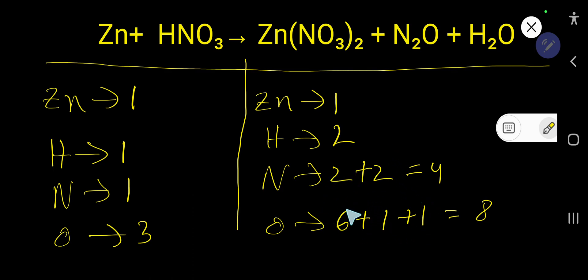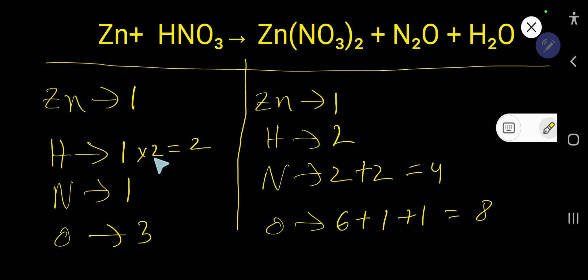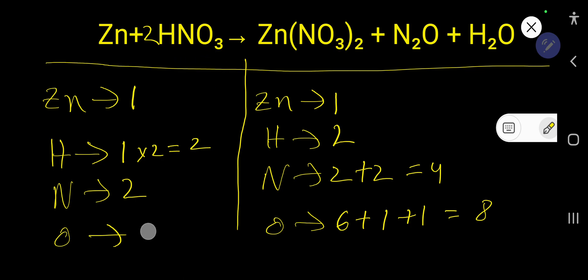We will balance atoms present in the fewest compounds first, and balance nitrogen and oxygen last. Here hydrogen is 2 on the left and 1 on the right. To balance hydrogen, I can multiply here by 2, that gives me 2. The rule is that if you multiply by something, that something must come before the atom. This hydrogen has come from HNO₃, so we place 2 there. The number of hydrogen is 2, the number of nitrogen will be 2, and the number of oxygen will be 3 times 6.